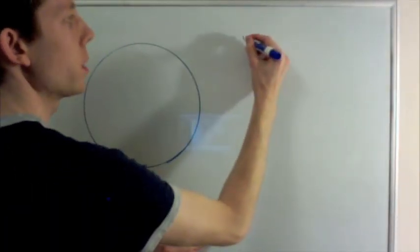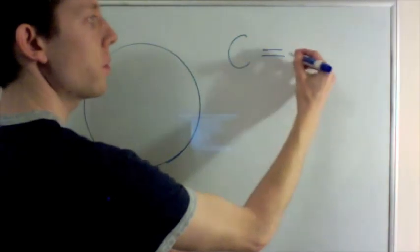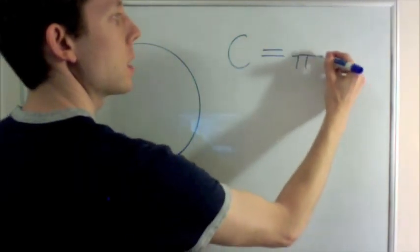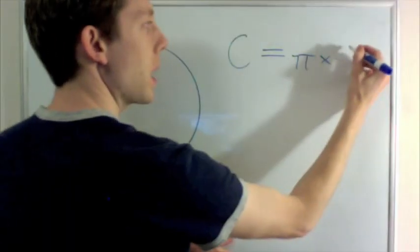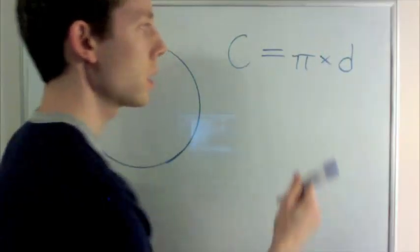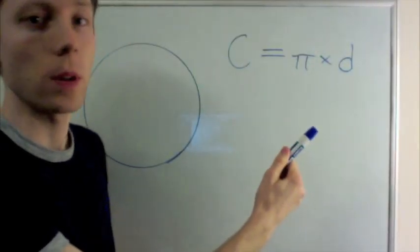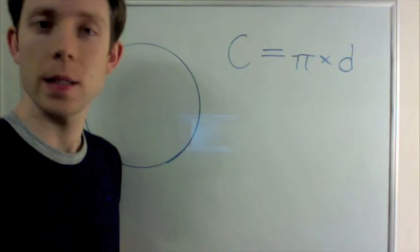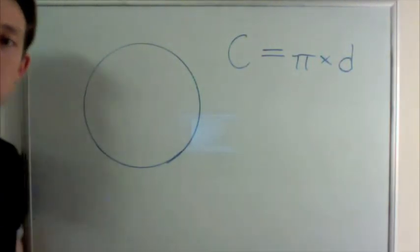I can write this down as a formula. I'll use the letter C for the circumference, and that's going to be PI times the diameter. So if I know the diameter is 10 centimeters, for example, the circumference is going to be PI times that, about 31.4 centimeters.